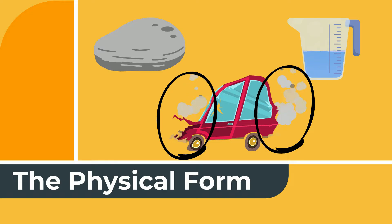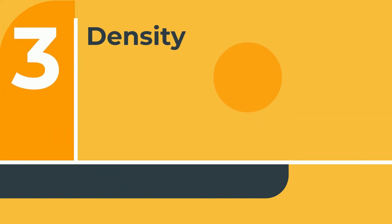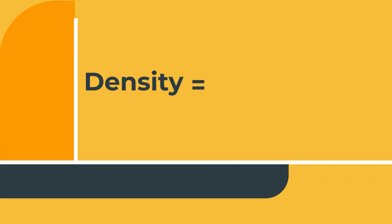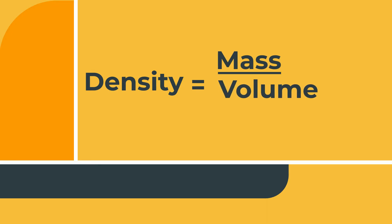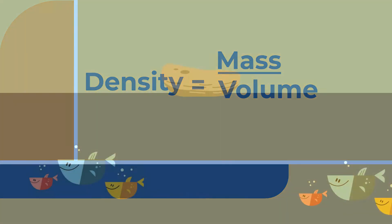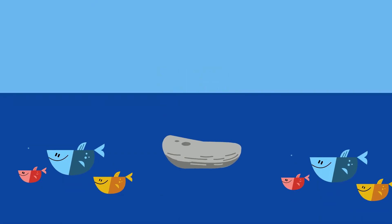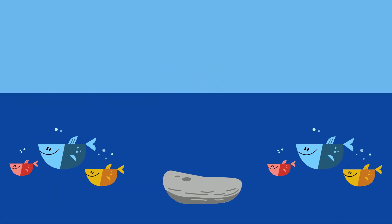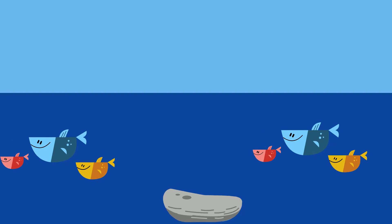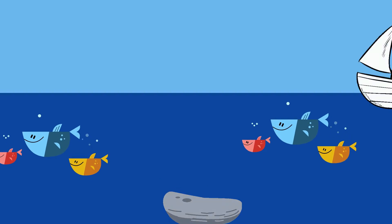3. Density – it's the mass per unit of volume of a substance. The formula is density equals mass divided by volume. An object with a density greater than 1 sinks, and an object with a density less than 1 floats.